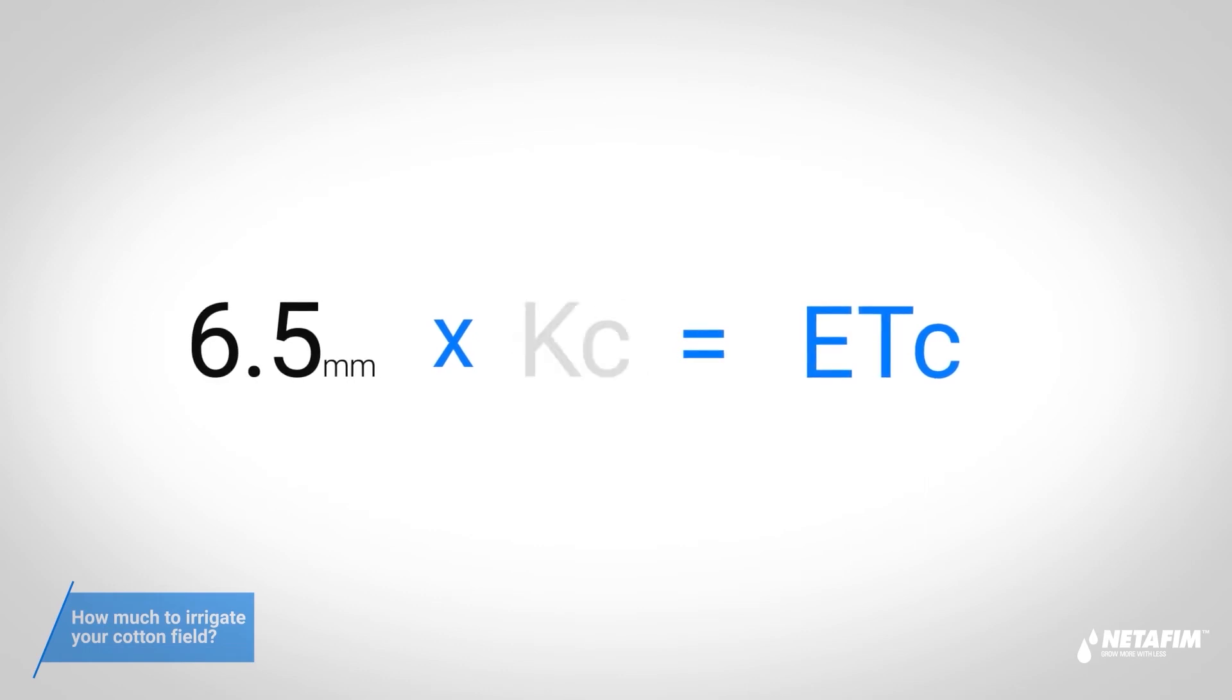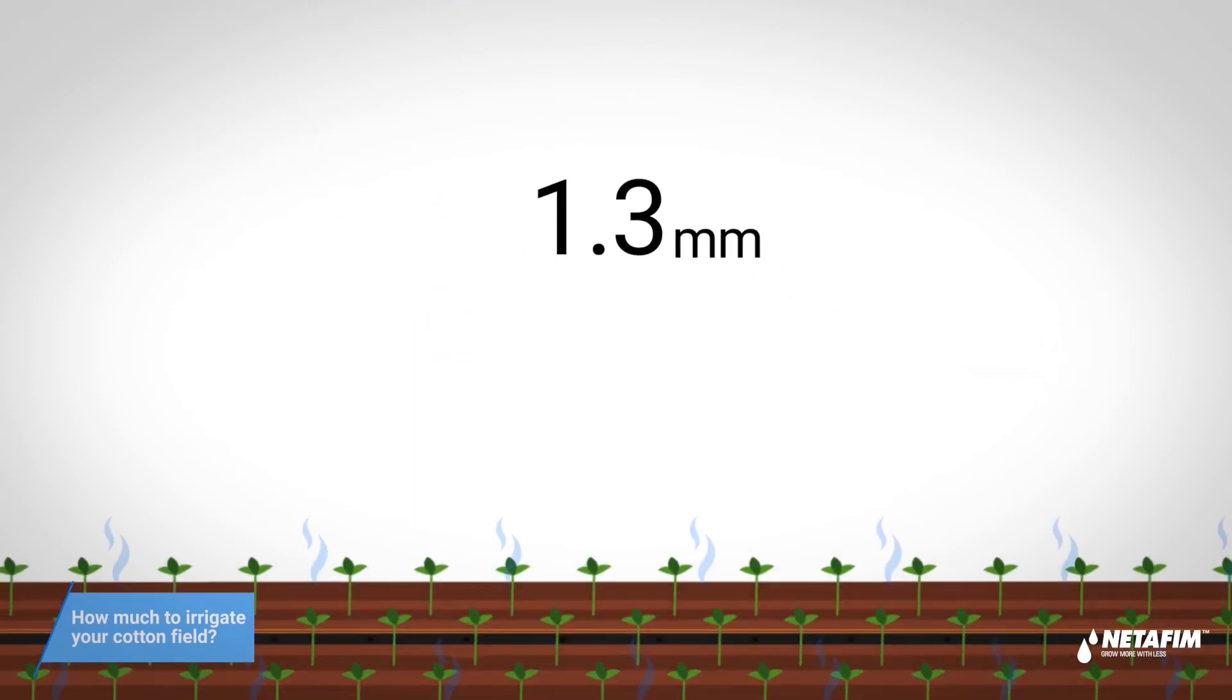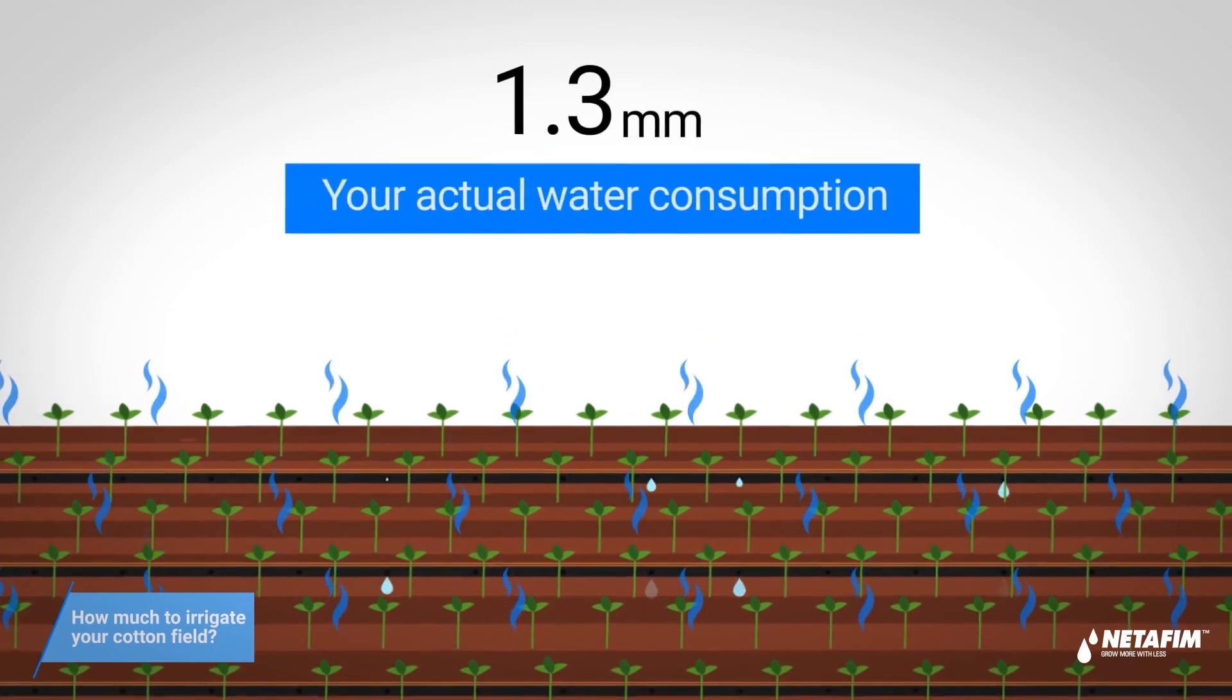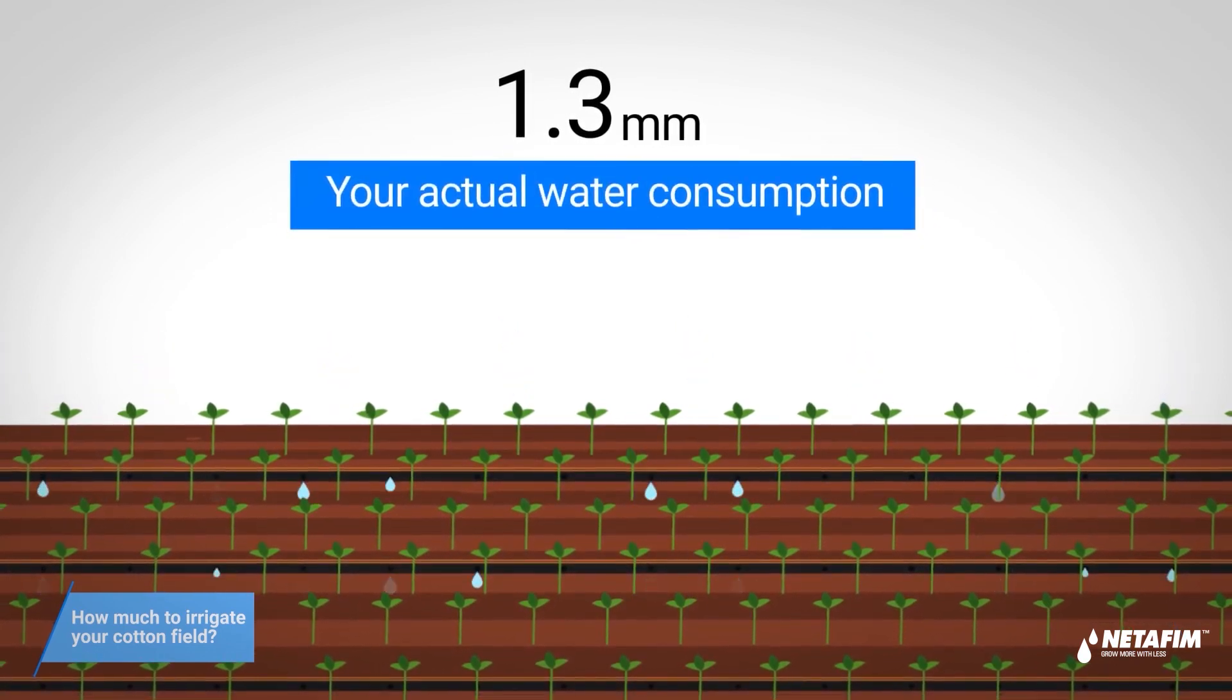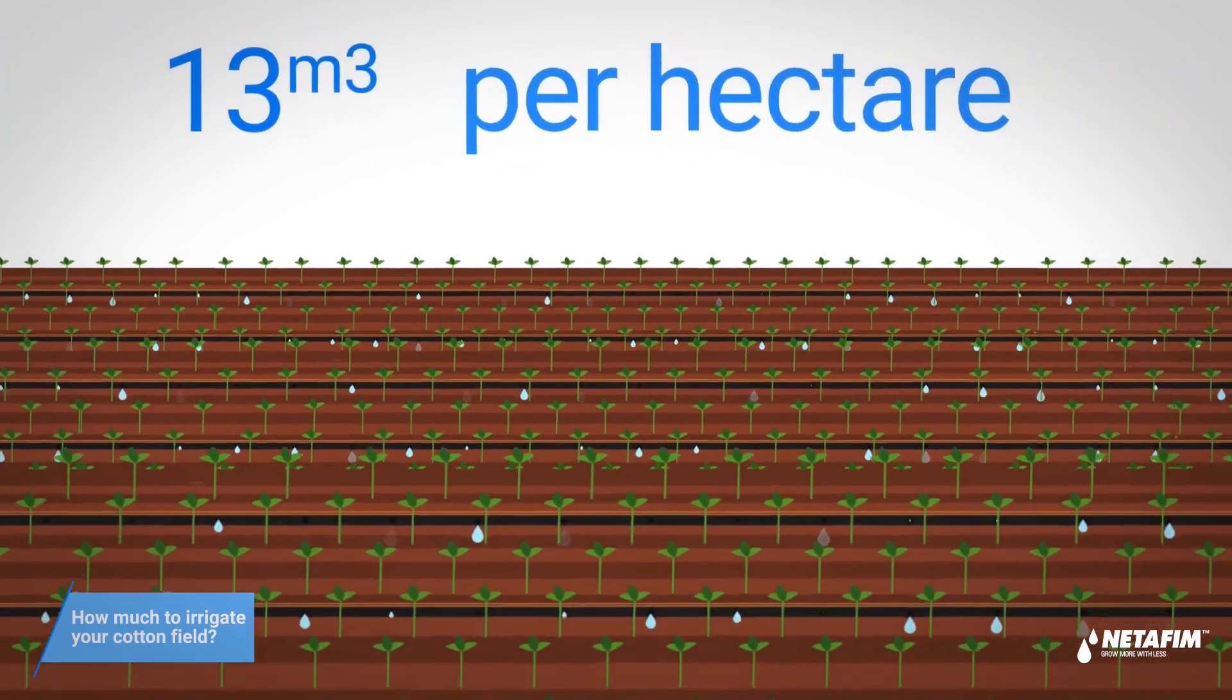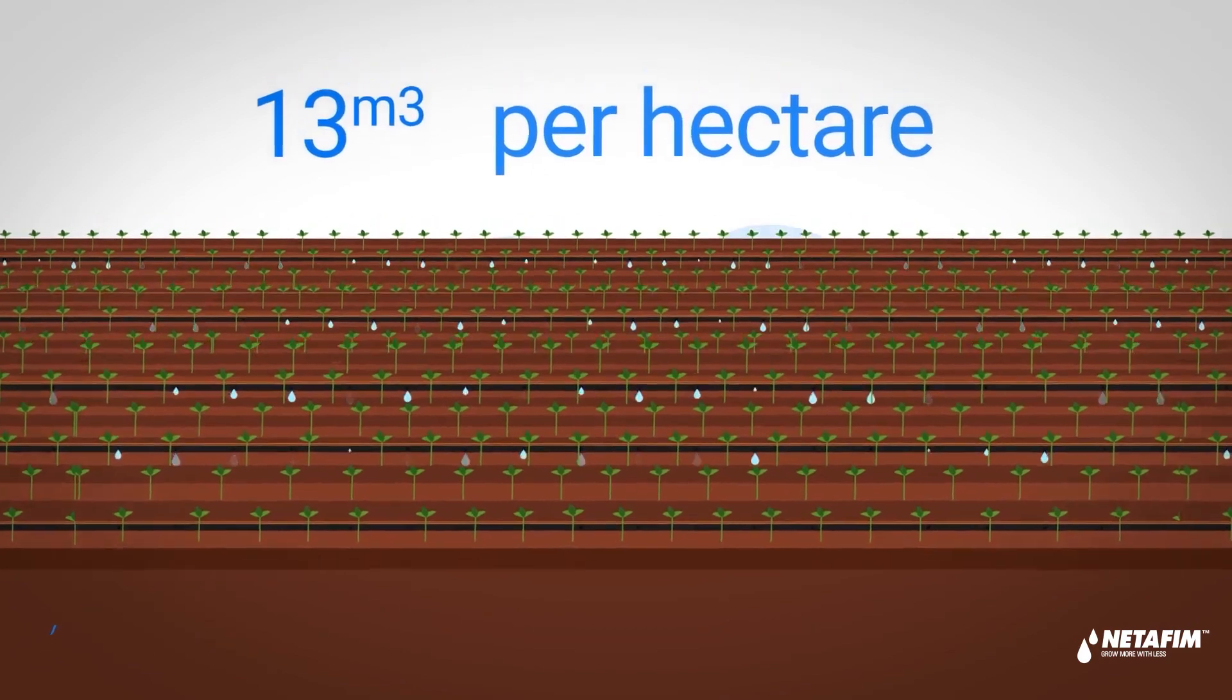An ETO of 6.5 millimeters multiplied by a factor of 0.2 equals 1.3 millimeters, and that's your cotton field's actual water consumption for yesterday. This means your field needs 1.3 millimeters or 13 cubic meters per hectare for its optimal water balance.